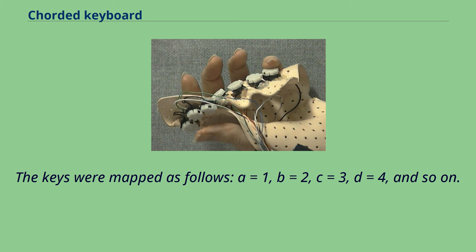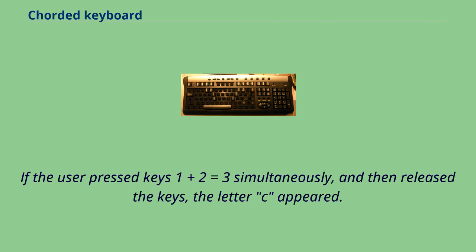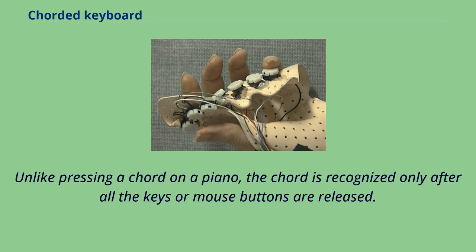The keys were mapped as follows: A equals 1, B equals 2, C equals 3, D equals 4, and so on. If the user pressed keys 1 plus 2 (equaling 3) simultaneously and then released the keys, the letter C appeared. Unlike pressing a chord on a piano, the chord is recognized only after all the keys or mouse buttons are released.